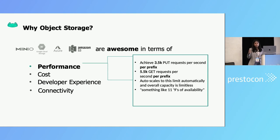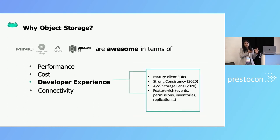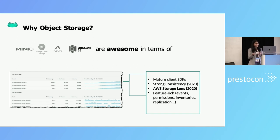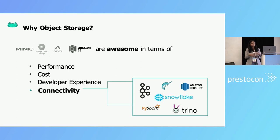Cost — they are almost 5 to 10 times cheaper compared to block storage. Developer experience is important because these object stores give us mature SDKs and different features that enable us to look into files and make decisions on how to store and optimize them. For example, AWS gives you the storage lens where you can look at how the data is growing in different partitions and buckets. And connectivity — we have all these different data applications, both consumers and producers, with the ability to connect to our object stores.